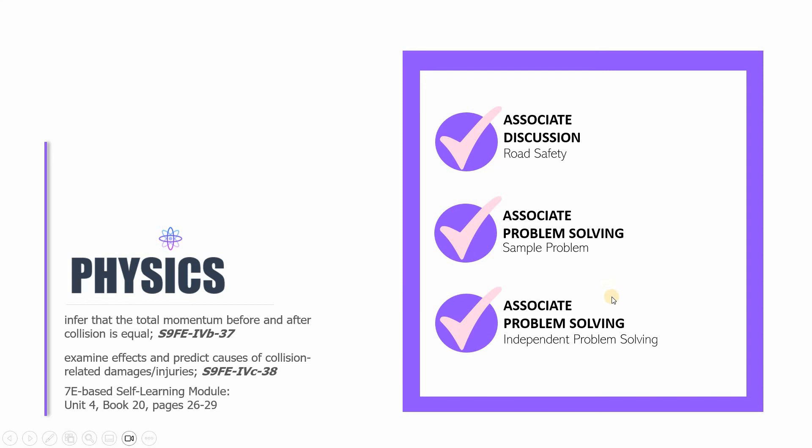Remember that the learning competencies that we're working on are still as follows: so we were trying to train ourselves on inferring that the total momentum before and after collision is equal, and we were also doing our best to examine effects and predict causes of collision-related damages and injuries. Remember that this edition of Physics 9 is actually based on the 7E-based self-learning module in Science 9. Particularly you will find these parts on Unit 4, Book number 20, pages 26 to 29. This has been Sir CJ, and I'm hoping that I will see you in the next video lesson. Have a good day.